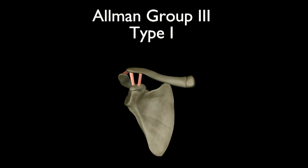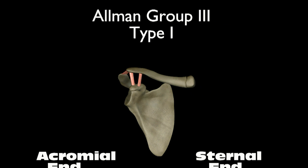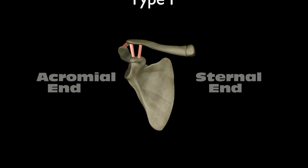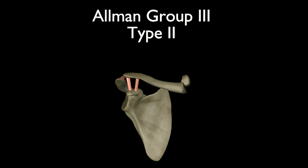Group 3 fractures are fractures that occur on the sternal end of the clavicle. Group 3 type 1 fractures are minimally displaced and can be treated without surgery. Type 2 fractures are displaced and can sometimes push against nerves or blood vessels near the sternum, in which case they may require surgery.